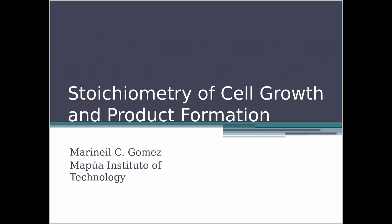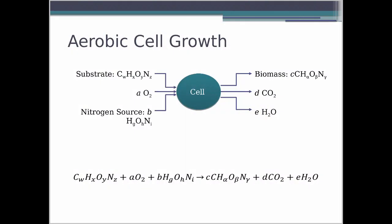In this lecture, we will be discussing about the stoichiometry of cell growth and product formation. This is a rather long lecture, so we will be dividing it into two parts. Last time we discussed about material balances. Now, in this part of the lecture, we will be discussing about the material balance with cell growth and product formation. We can consider the cell as a worker, or rather, it's a mini-bioreactor by itself.